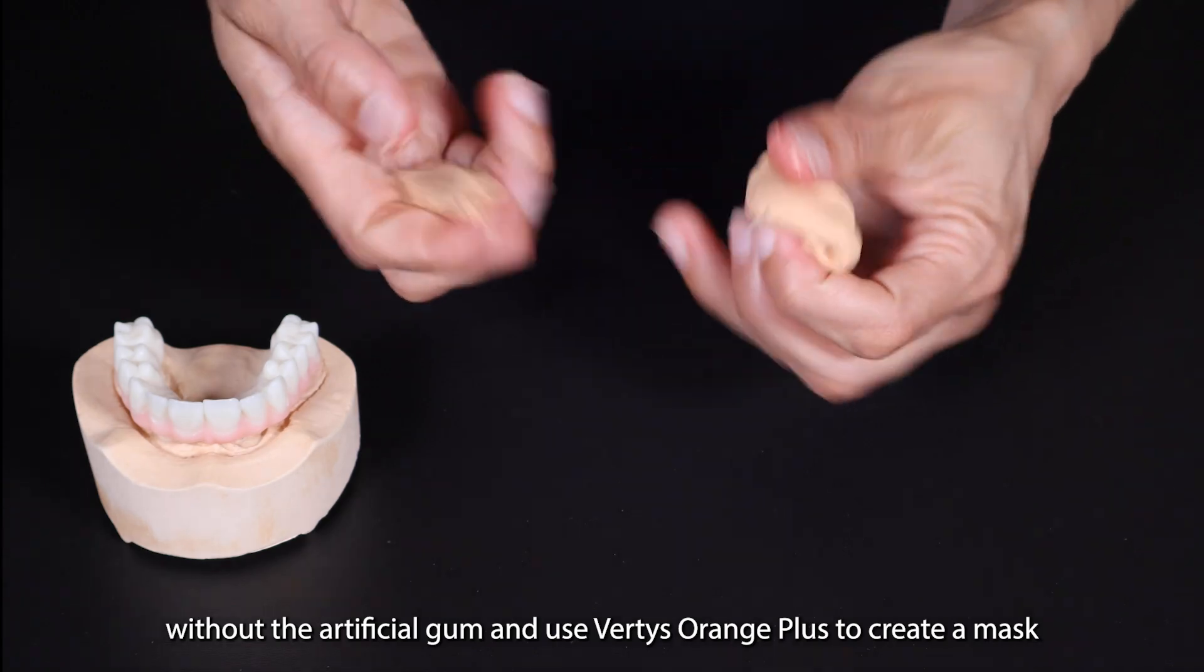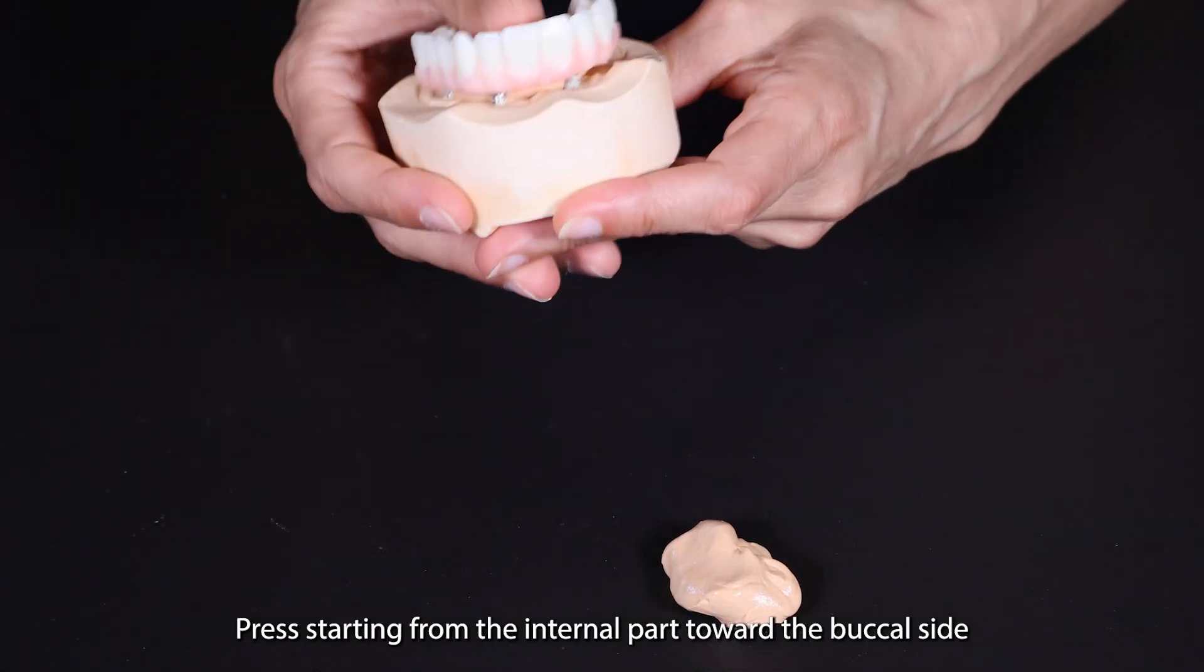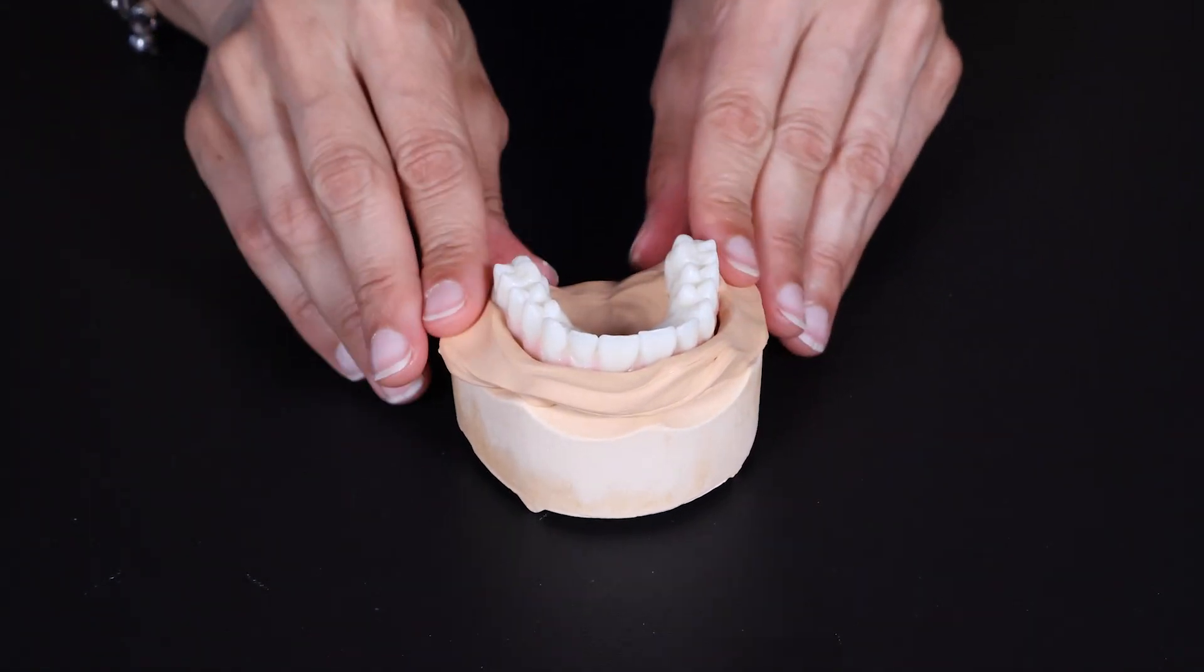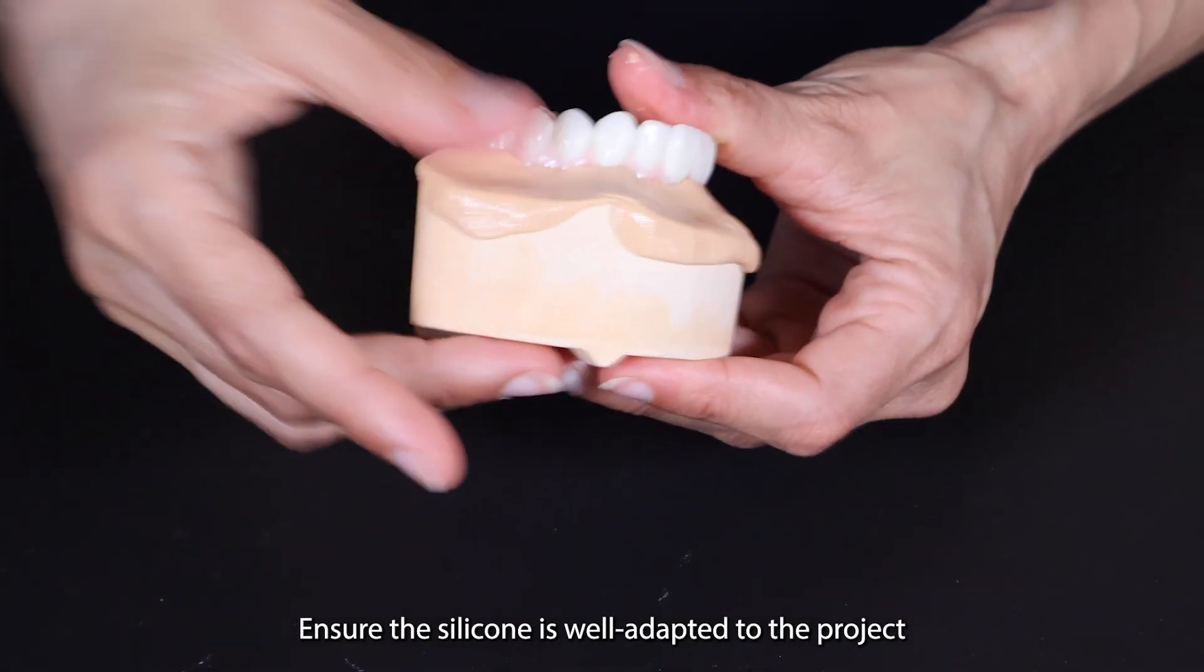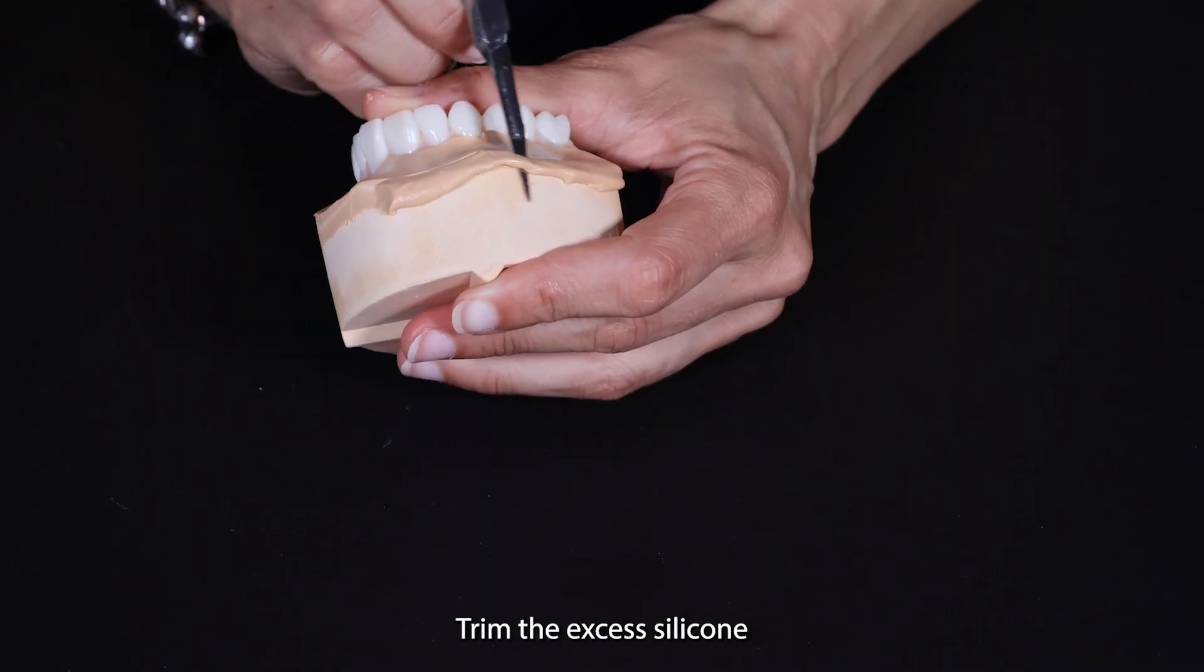Use Vertis Orange Plus to create a mask that will contour the entire project. Press starting from the internal part toward the buccal side. Ensure the silicone is well adapted to the project. It is important that the mask is smooth. At the end, trim the excess silicone.